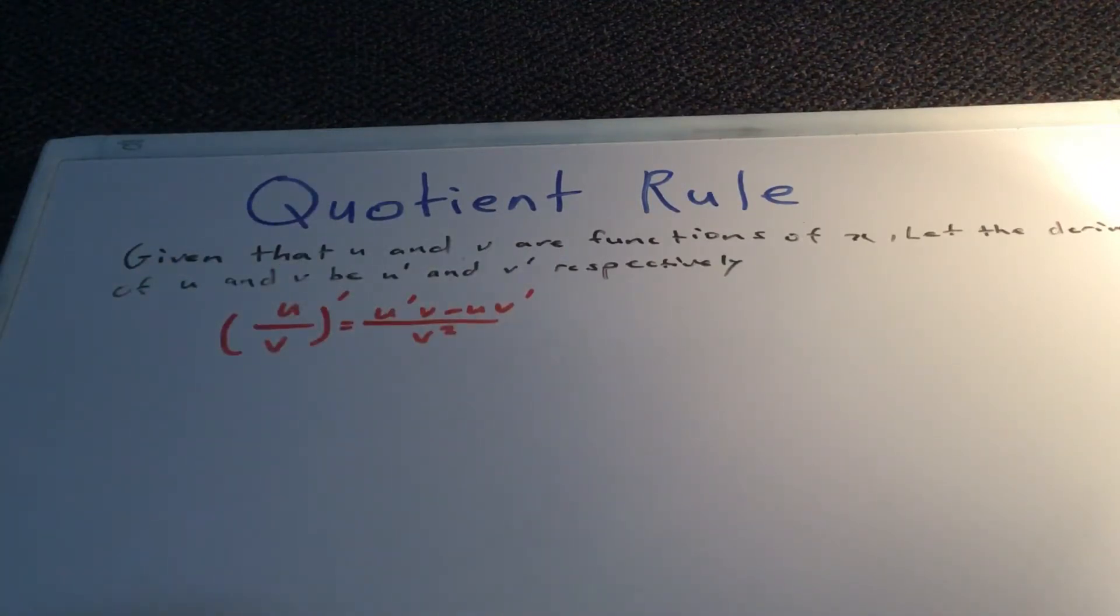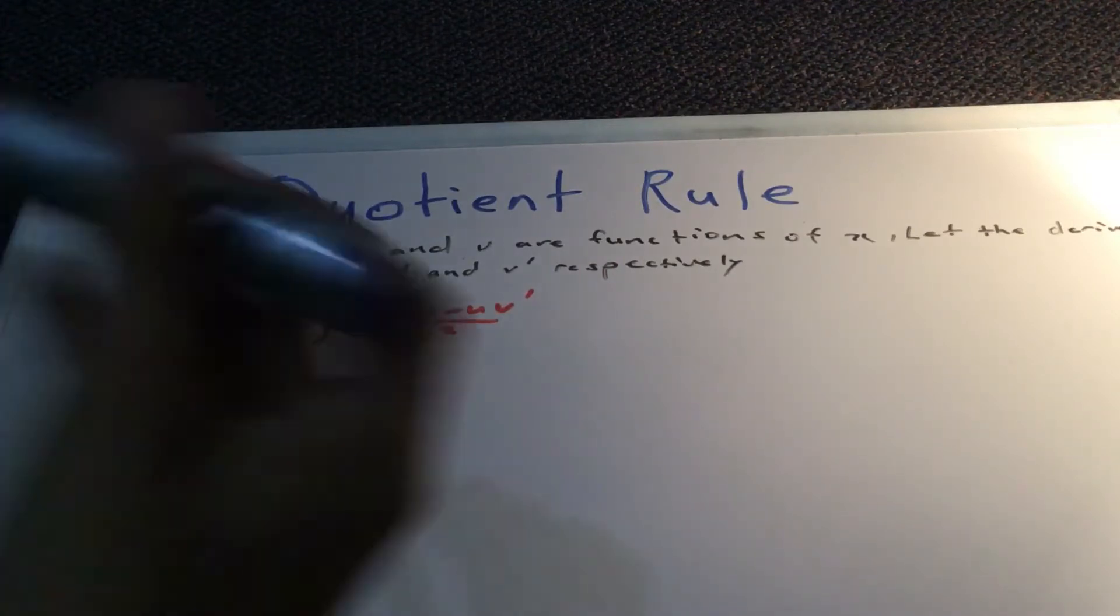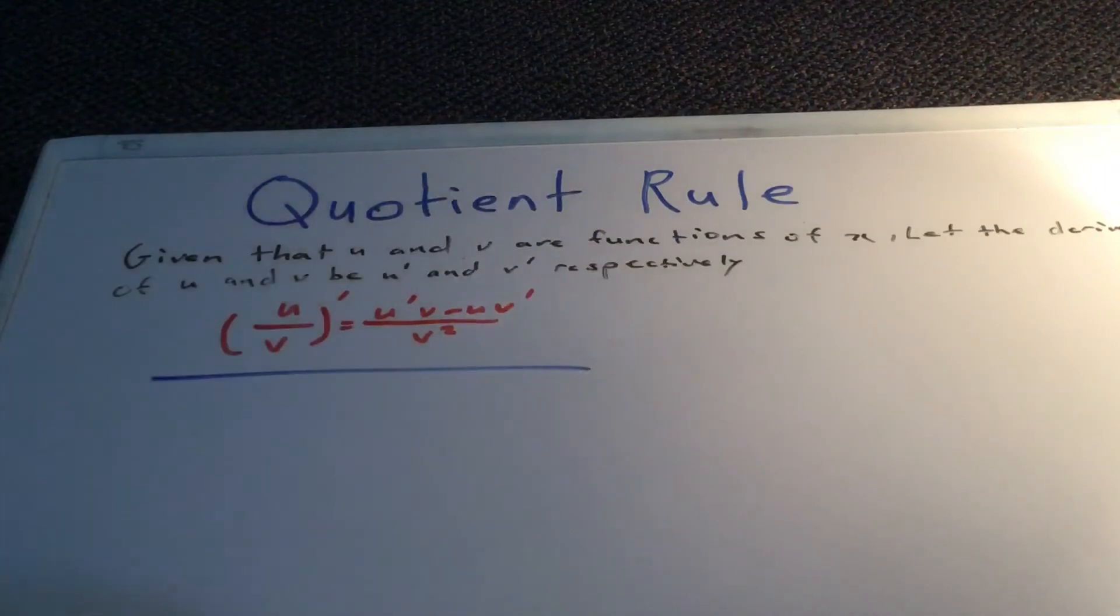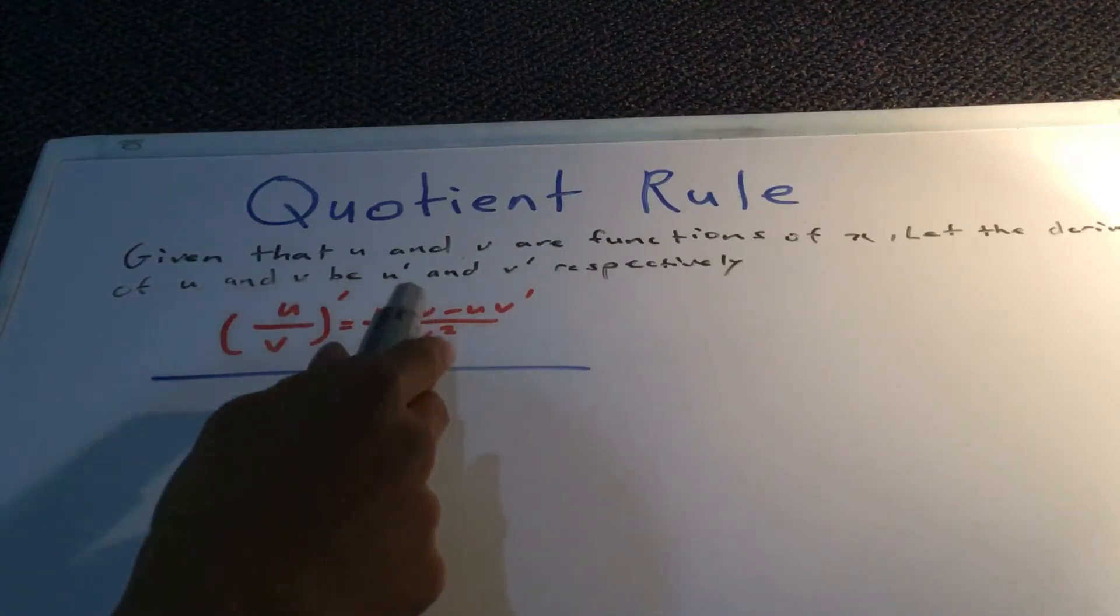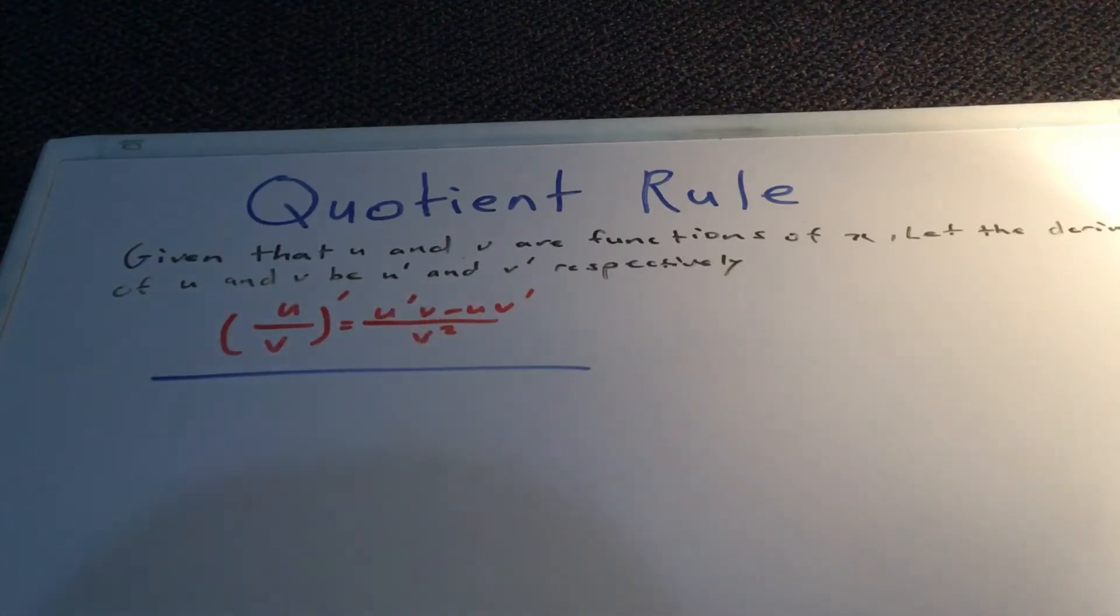So what is our formula? When you're using the quotient rule, you have to remember this formula. And what does it mean? The left-hand side is u over v, so (u/v) prime is equal to u prime times v minus u times v prime, over v squared.